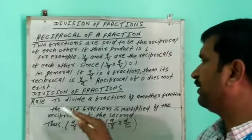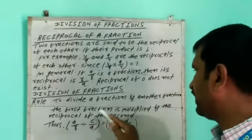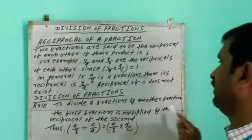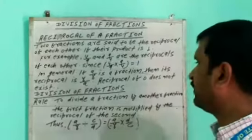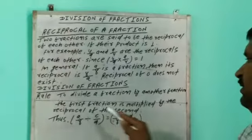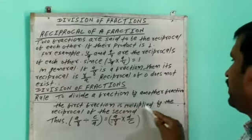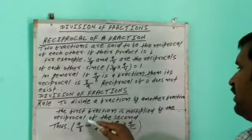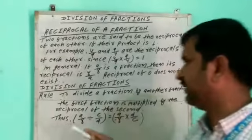The rule is to divide a fraction by another fraction. The first fraction is multiplied by the reciprocal of the second. We will multiply the first fraction by the reciprocal. Second fraction by the reciprocal. Thus,